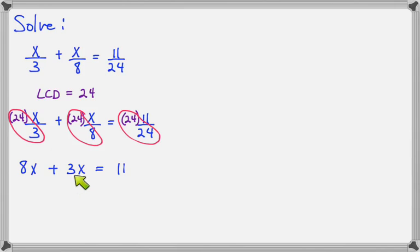Now combine your like terms on the right side. 8x plus 3x is 11x and so the left side is 11x and the right side is still 11. Divide both sides by 11 and we get x equals 1.